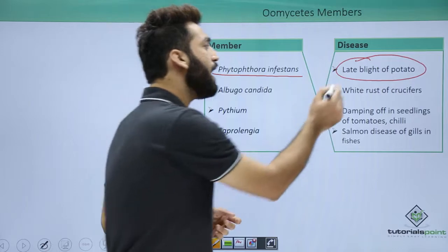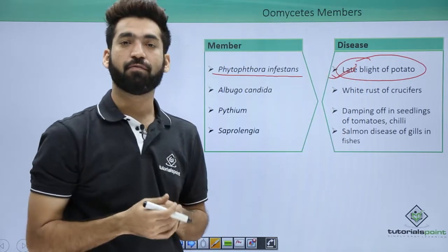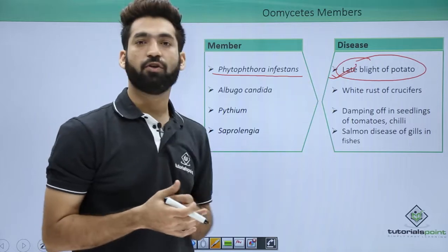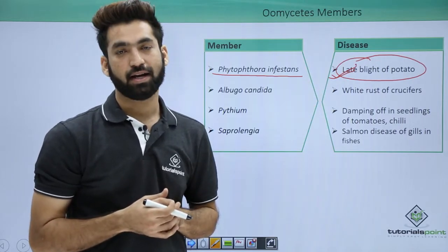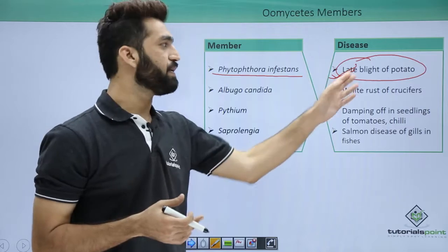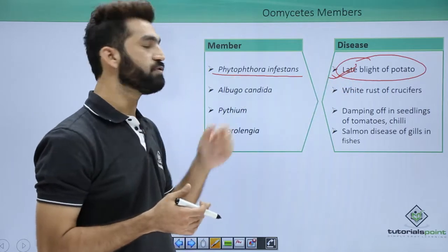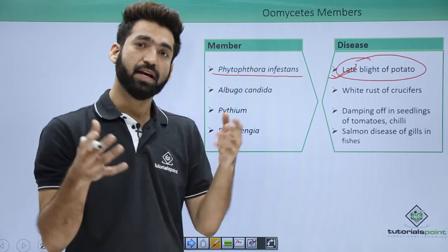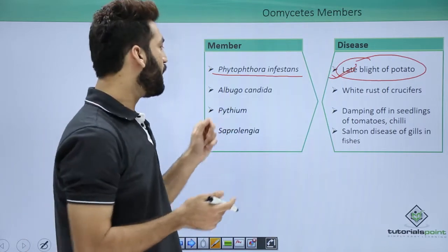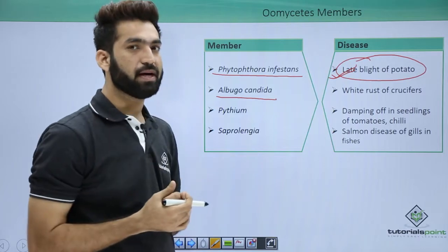Late blight of potato had one very common historical impact — the famine in Ireland. The Ireland famine was caused by late blight of potato, which was caused by Phytophthora infestans.